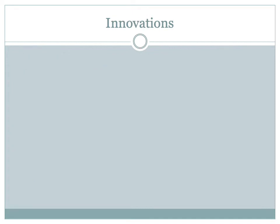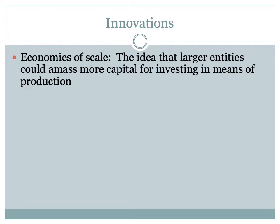Related to inventions, and somewhat an interchangeable word, is innovations. The way to separate them: inventions are things, and innovations are ways to do things. When we talk about economies of scale, it's the idea that larger entities could amass more capital for investing in means of production. If you're large enough to buy your materials on the scale of a Costco, you get everything you need at a lower price, make your product cheaper, and can dominate a market more. This idea of economies of scale really gets its main thrust in the Gilded Age.